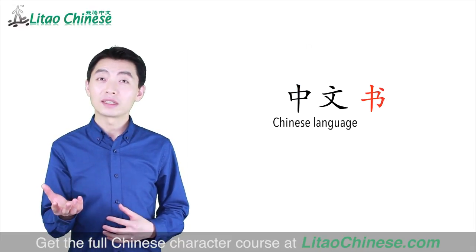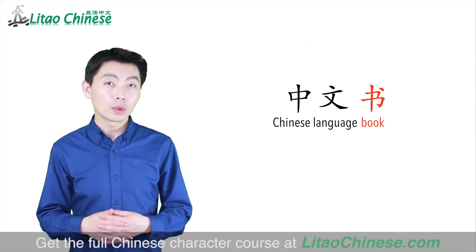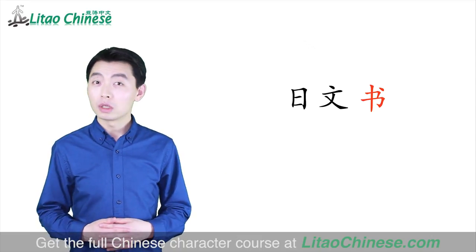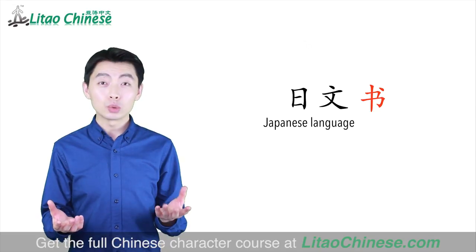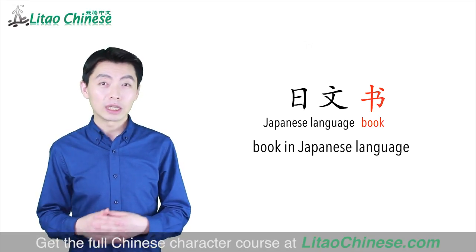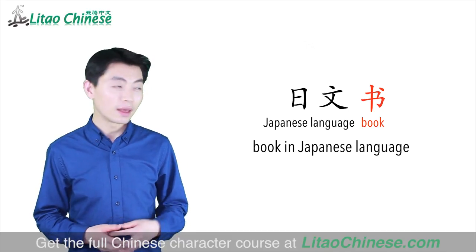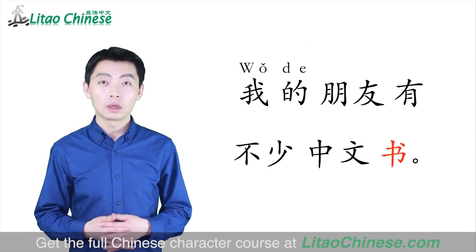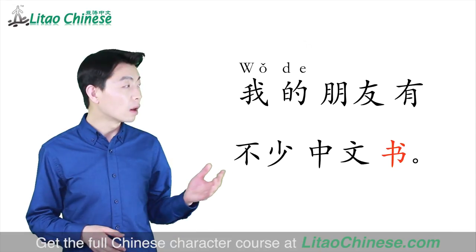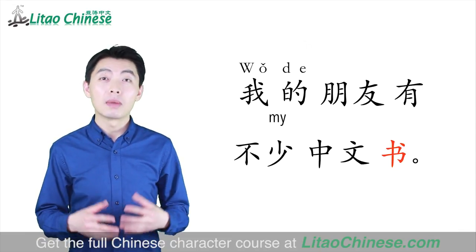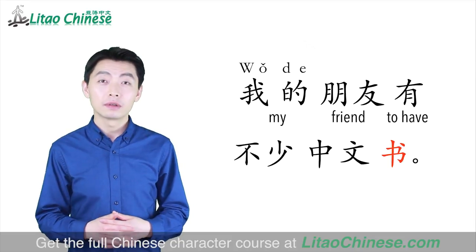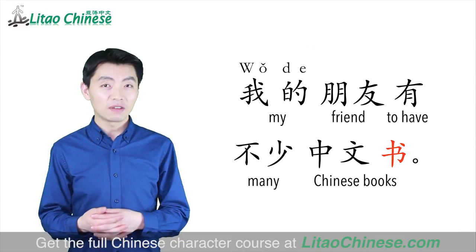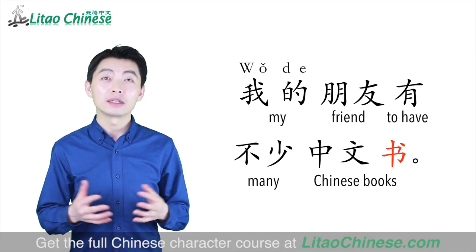Let's look at some examples with the character 书. 书店: 书 means book, 店 means store, so 书店 means bookstore. 中文书: 中文 means Chinese language, so 中文书 means a book in the Chinese language. 日文书: 日文 means Japanese language, so 日文书 means a book in the Japanese language. Here is a sentence: 我的朋友有不少中文书. 我的朋友 means my friend, 有 means to have, 不少 means many, 中文书 means Chinese books. So the sentence means: my friend has many Chinese books.